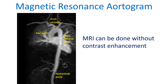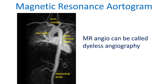Iodine-based contrasts are used in conventional angiography, whereas MRI can image blood vessels without injection of any contrast — a technique often called non-contrast or dialess angiography.